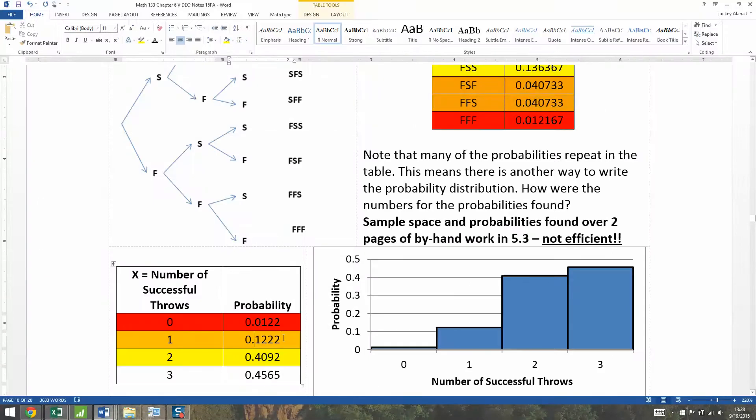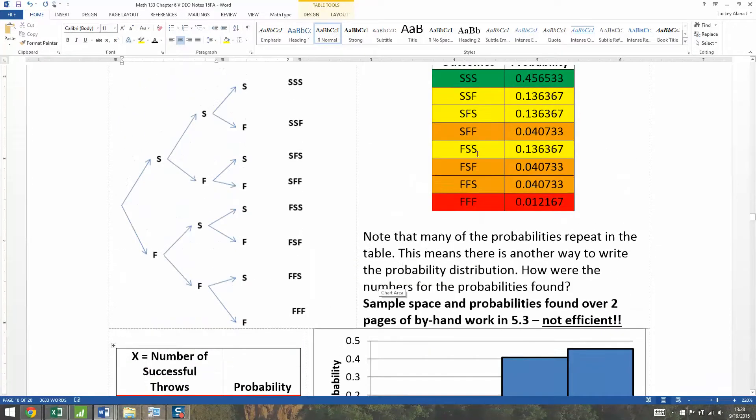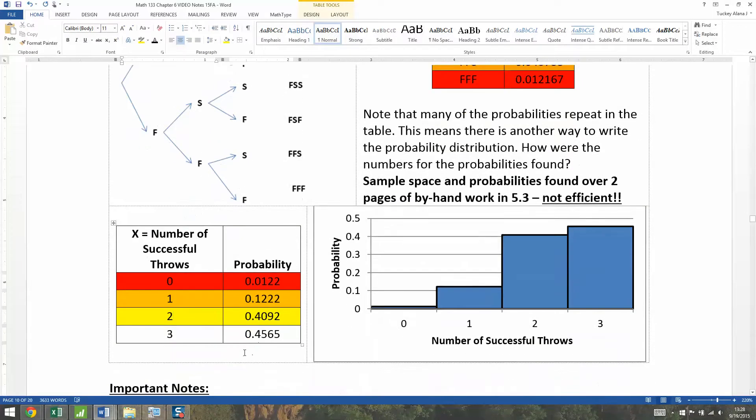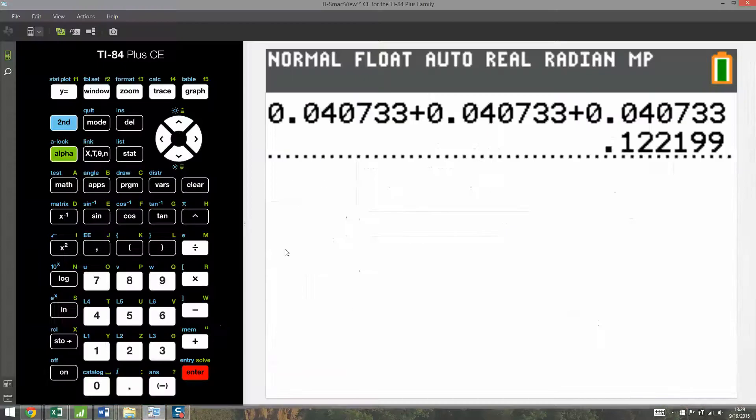In the fall of 2015, there was a small typo. It should be 0.1222. Sorry about that. And then for two successes and one failure, it should be 0.136 plus 0.136, I should say. So when you add up those probabilities, you'll get 0.4092. Actually, that's a typo. It should be 0.4091. Sorry about that.